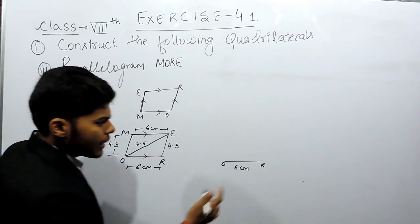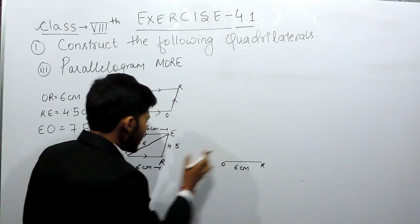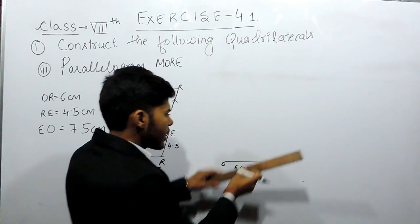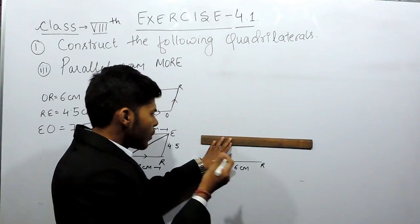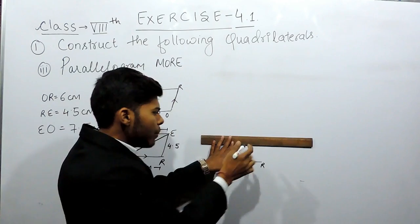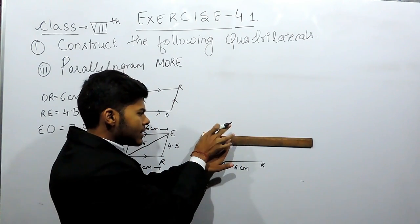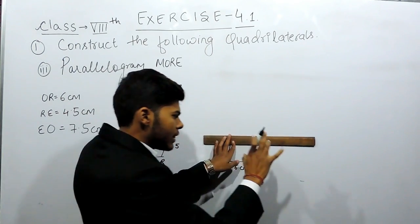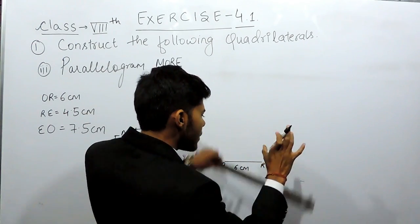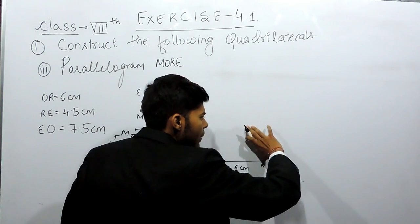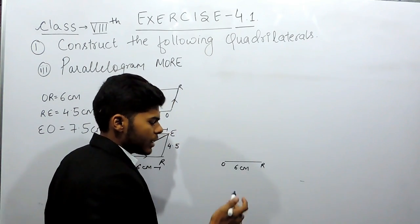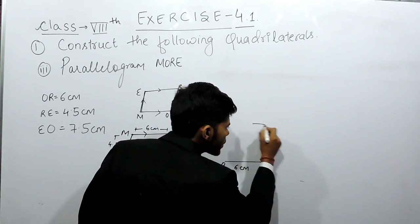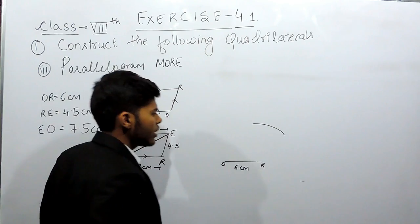Now after that we'll keep the compass at point R and cut an arc of 4.5 centimeters. Now how to cut an arc? We'll keep the ruler on the page, open the compass, keep the pointed end at 0, and open it till 4.5 centimeters. Now with this compass, keep it at point R and make an arc of 4.5 centimeters. Supposingly this was a compass, I made an arc like this. So this is an arc from point R.